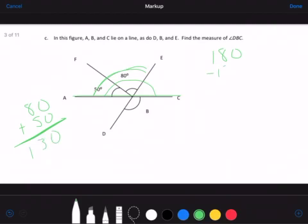So I'm going to add 80 plus 50 to get 130, and I'm going to subtract that from the 180. 0 minus 0 is 0, 8 minus 3 is 5, 1 minus 1 is 0. So you've got 50 degrees for this angle here.